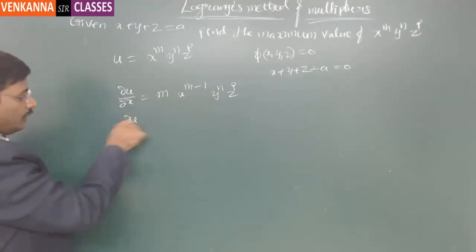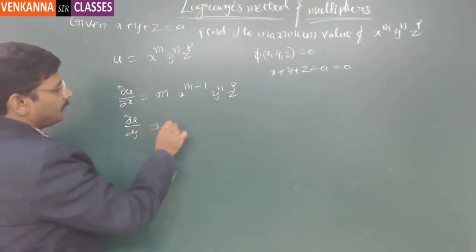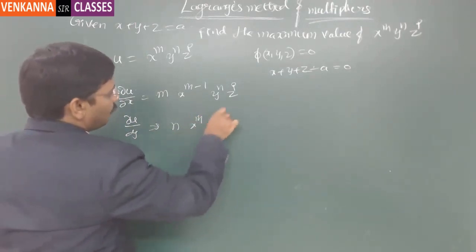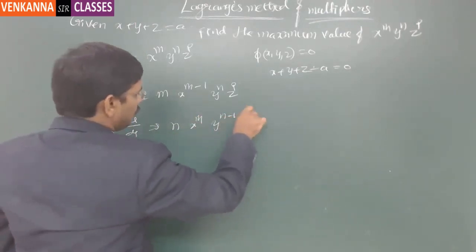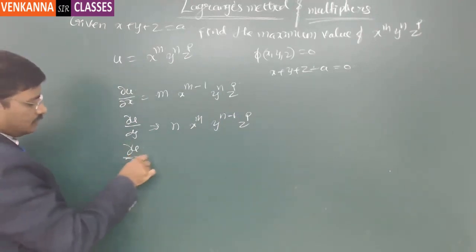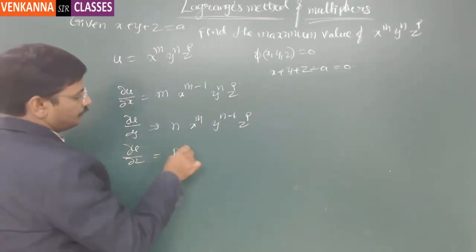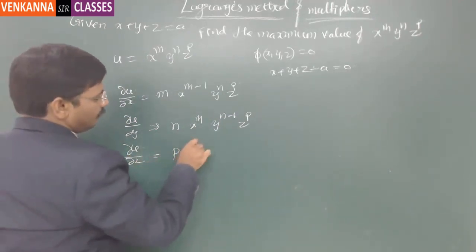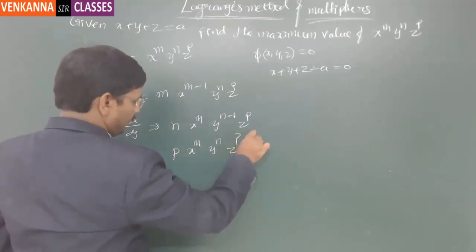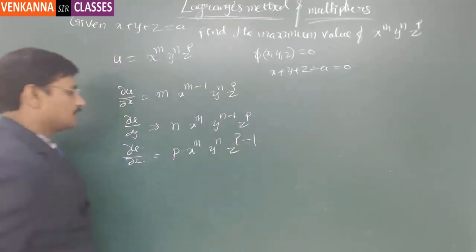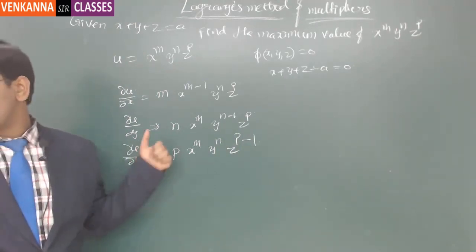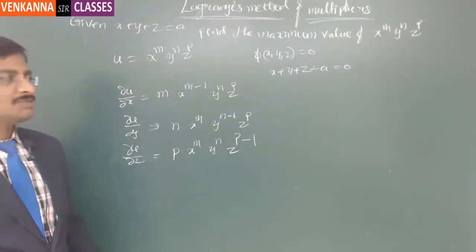Then ∂u/∂y equals n · x^m · y^(n-1) · z^p. Similarly, ∂u/∂z equals p · x^m · y^n · z^(p-1). These are the first derivatives of the function for which we have to find the maximum value.